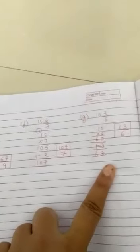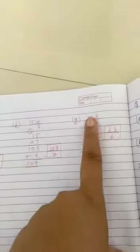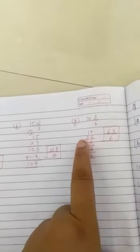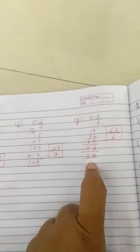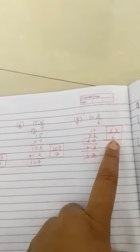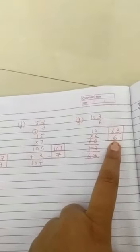Moving on to G question: 10 3/6. 10 into 6, that is 60. 60 plus 3, that is 63. So 63 divided by 6 is our improper fraction.